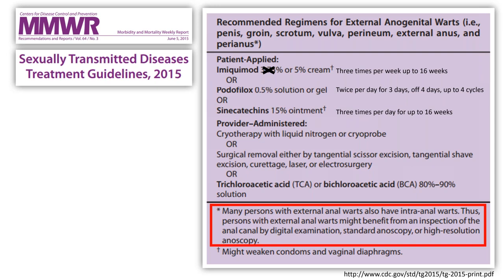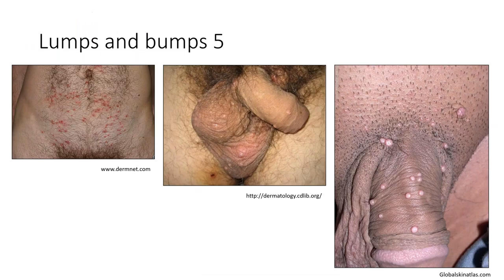The CDC guidelines discuss intra-anal warts — they hedge on this, and probably correctly. Persons with external anal warts might benefit from digital examination, standard anoscopy, or high-resolution anoscopy, but once found, there's a question of whether acting on that information actually improves patient outcomes, versus leading to many more procedures and potential harm. My practice is generally to limit that to people who are symptomatic or particularly worried about something beyond external genital warts, like anal cancer or precancerous lesions.